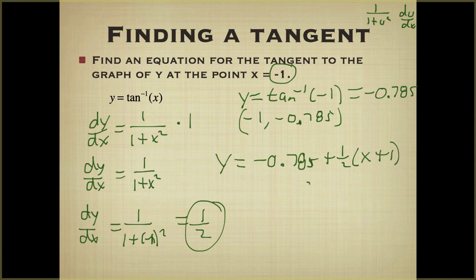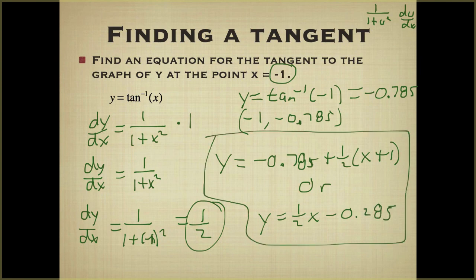If you would want to put this in slope intercept, you would get y equals 1 half x minus 0.285. You do not need to put them in slope intercept. You can leave them in point slope. All right, so that was finding the tangent line to an inverse tangent function.